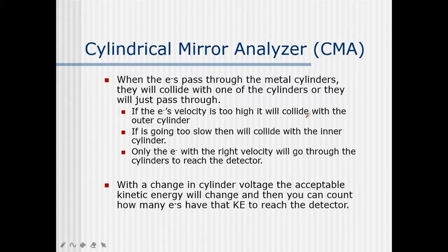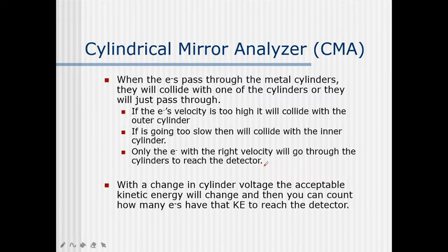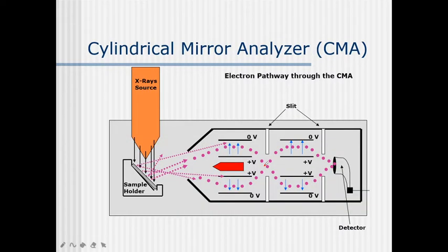If an electron's velocity is too high it will collide with the outer cylinder; if too slow, it will collide with the inner cylinder. Only electrons with the right velocity will pass through the cylinders to reach the detector. Only electrons that reach the detector give the spectra. With a change in the cylindrical voltage, the acceptable kinetic energy changes, and we can count how many electrons have the kinetic energy to reach the detector. This is how the cylindrical mirror analyzer works.